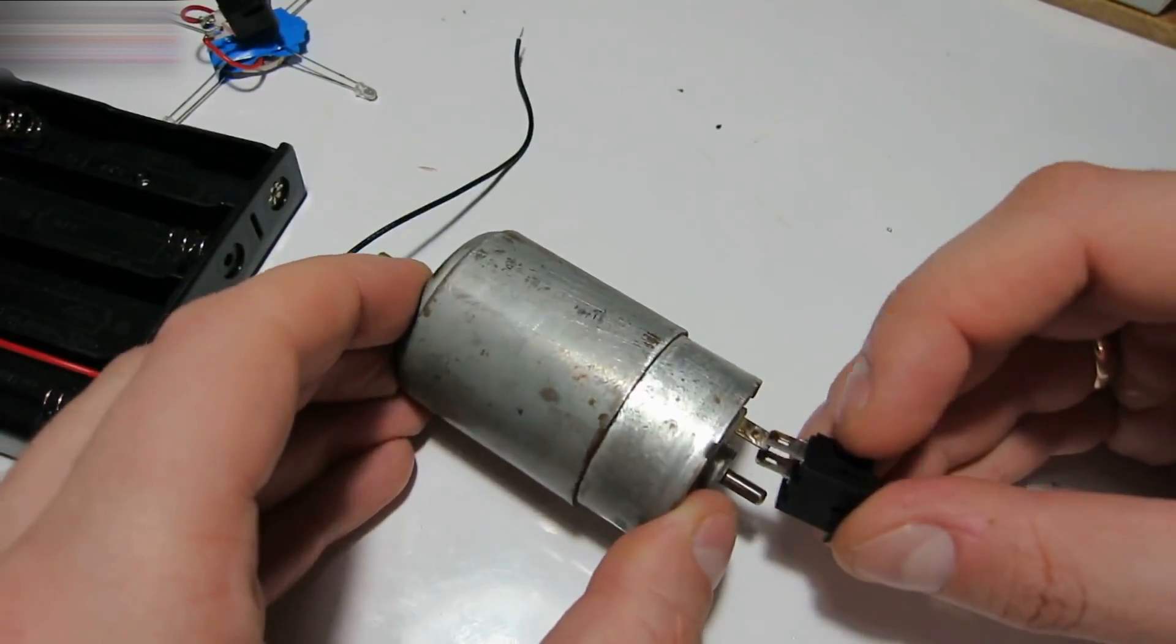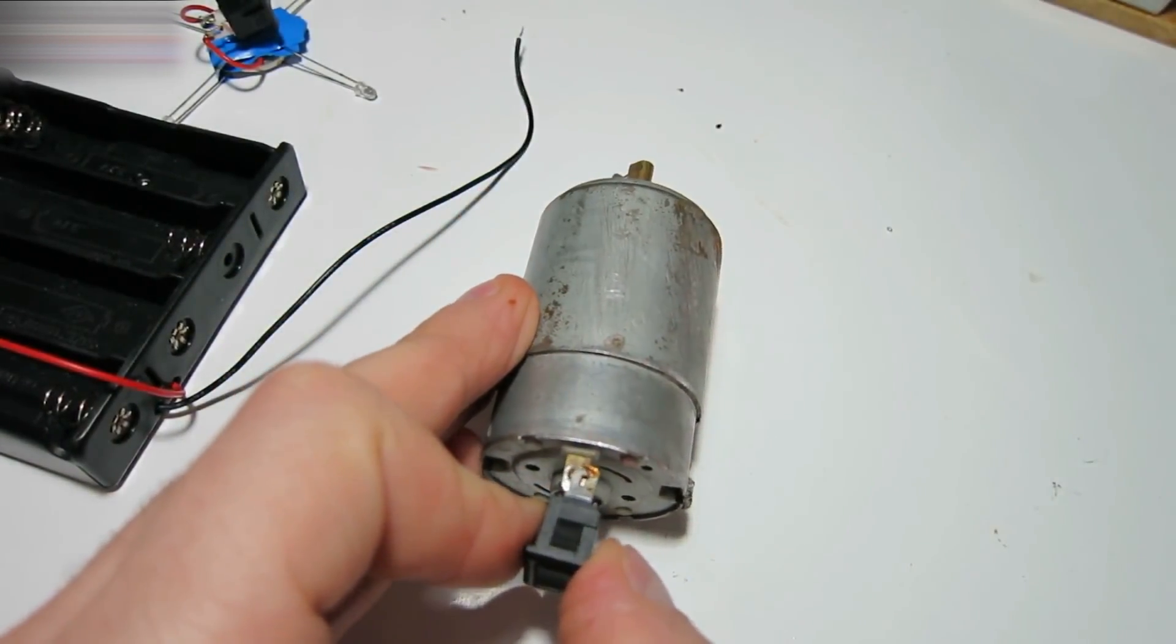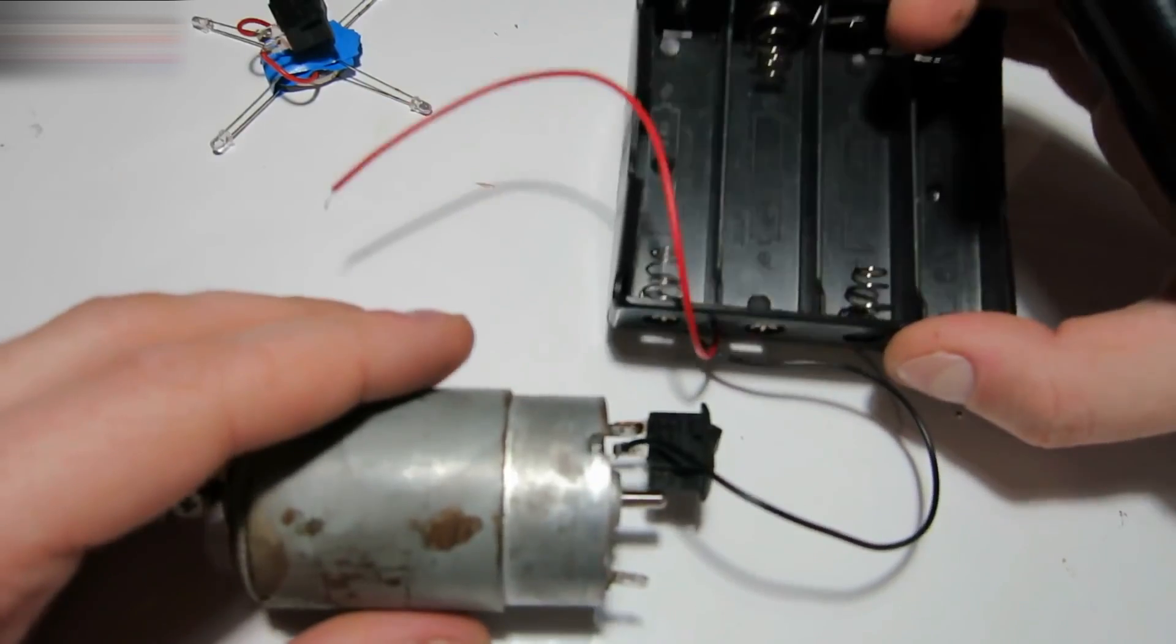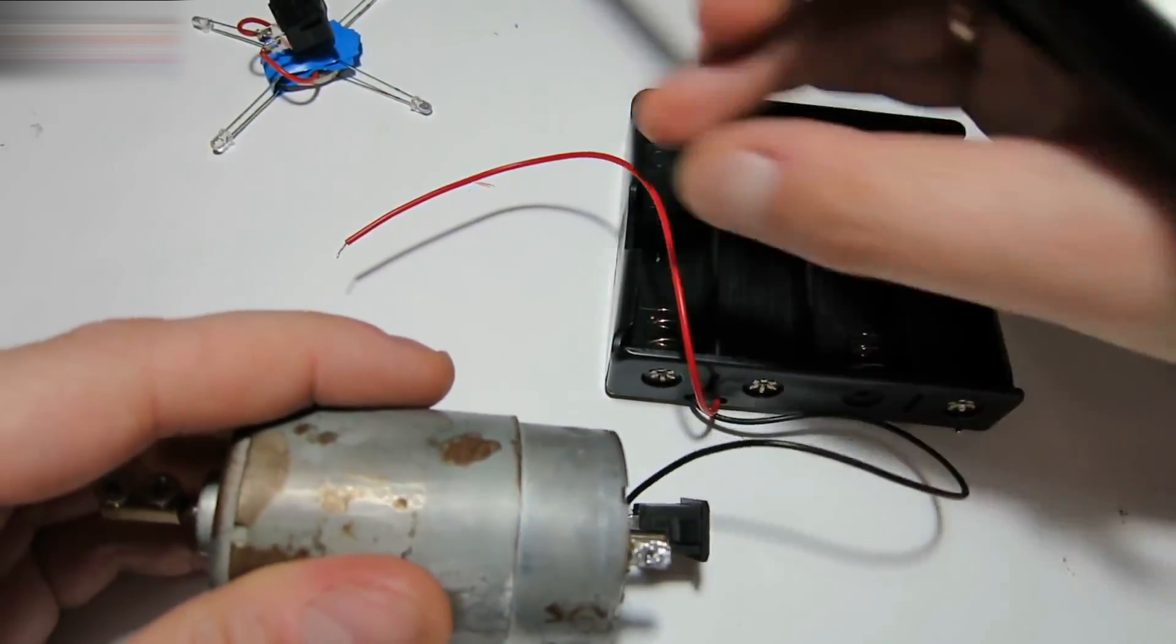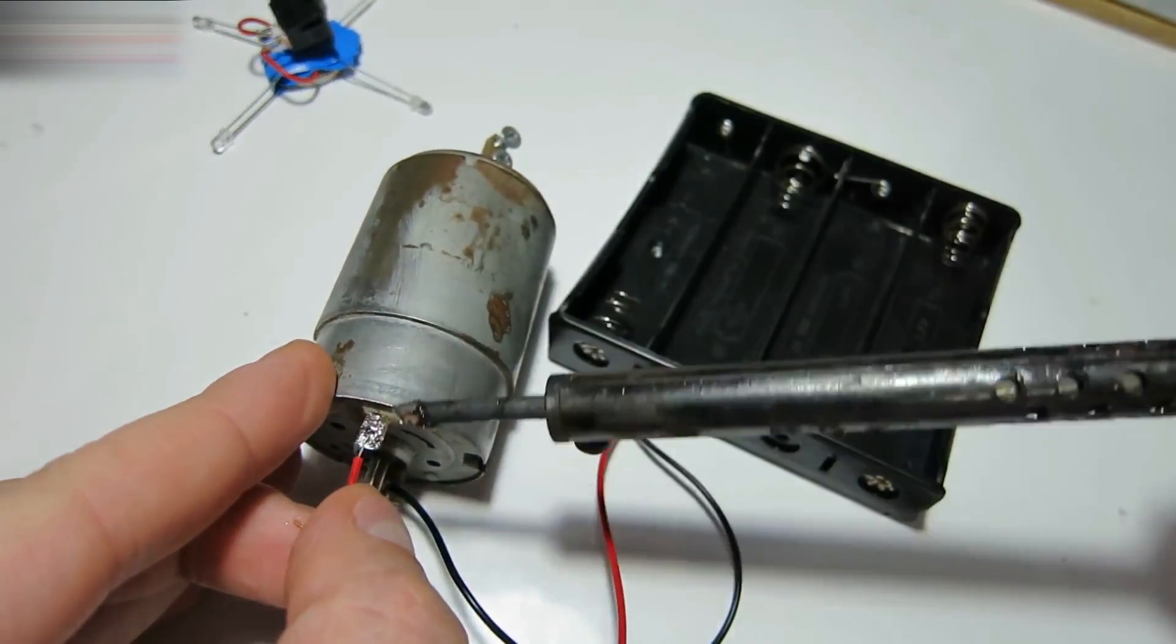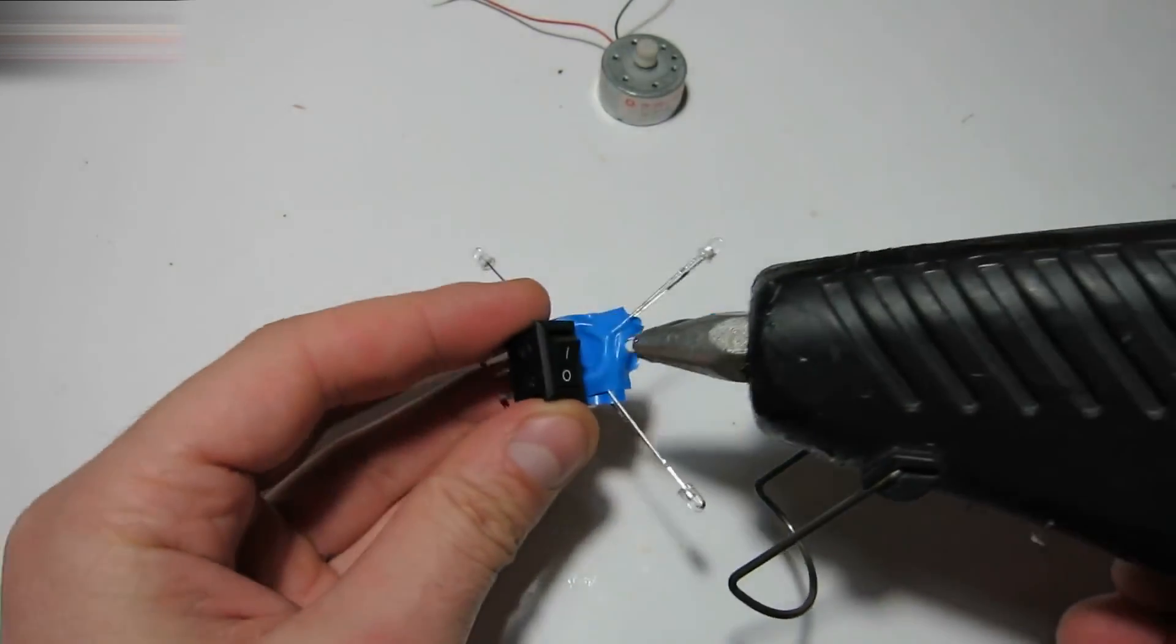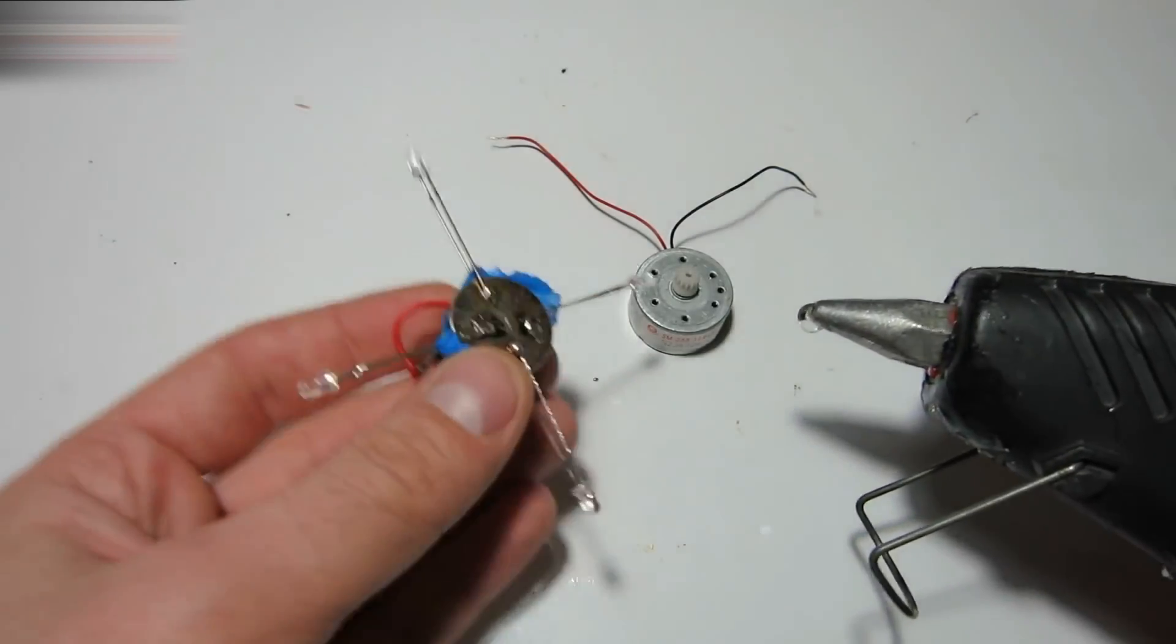Solder one of the terminals of the switch to the large motor. Solder one of the battery case wires to another terminal of the switch. Solder another battery case wire to the motor. Attach the switch with a glue gun to the LEDs with the CR2025 battery. Glue it all to the motor.